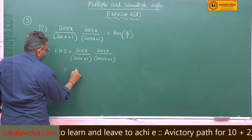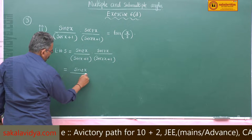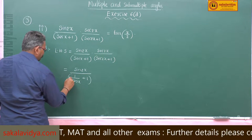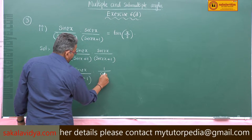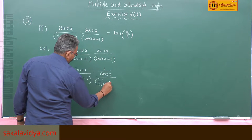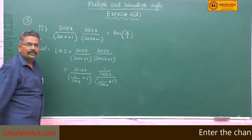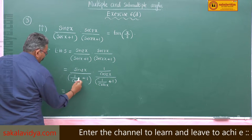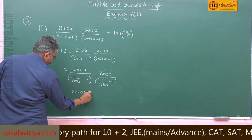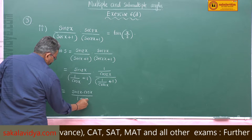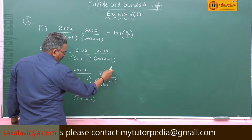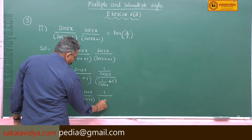Now, substituting: sin2x divided by (1/cosx + 1), into (1/cos2x) divided by (1/cos2x + 1). Here cos x is the LCM, giving (cosx · cos2x + 1/cos2x + 1) divided by (1/cos2x + 1 + cos2x).